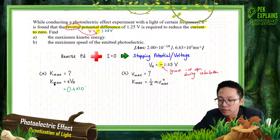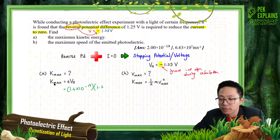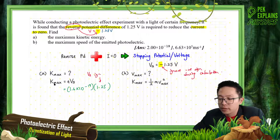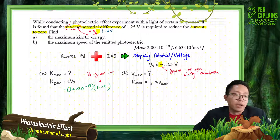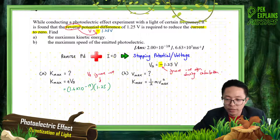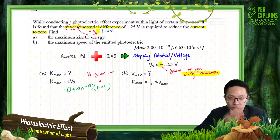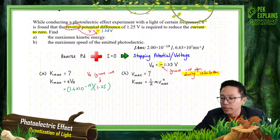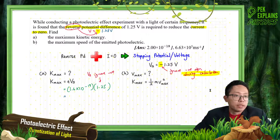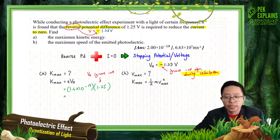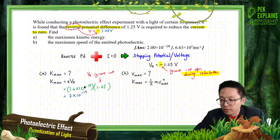Kmax equals eVs. The stopping voltage — ignore the negative sign during calculation, just substitute the value of Vs. After multiplying, the maximum kinetic energy is 2×10⁻¹⁹ Joules. This is in SI units — Joules.